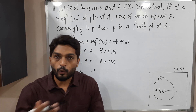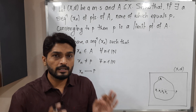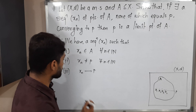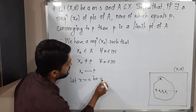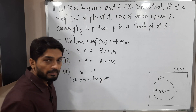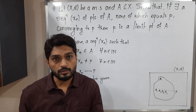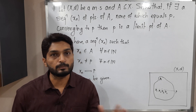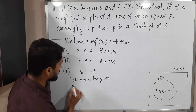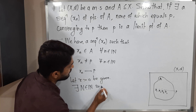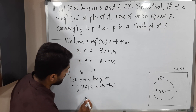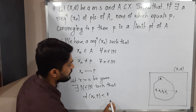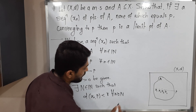I am going to use the convergent sequence definition. We are familiar with the definition of a convergent sequence. I am going to use the same definition, but at the place of epsilon I am going to write R. Let R greater than 0 be given. Epsilon denotes a very small positive real number, and here R is also a positive real number, so we can replace epsilon by R. By the definition of a convergent sequence, there exists a natural number N such that D(Xn, P) less than R for all n greater than or equal to capital N.